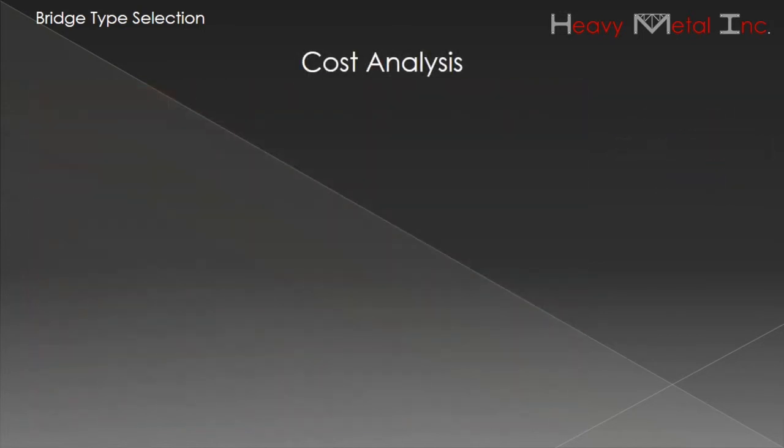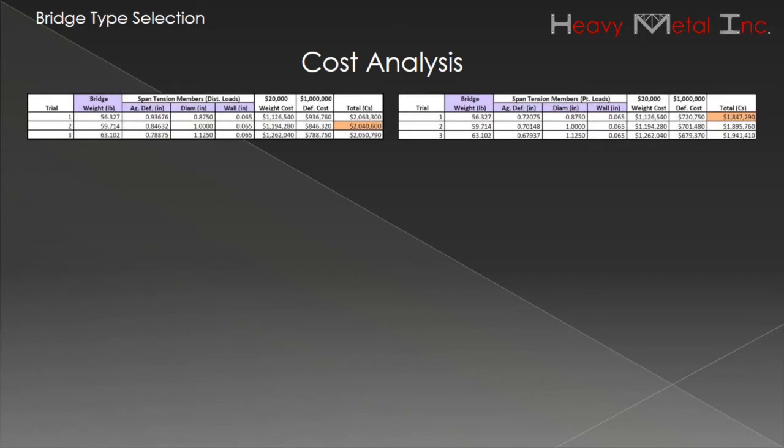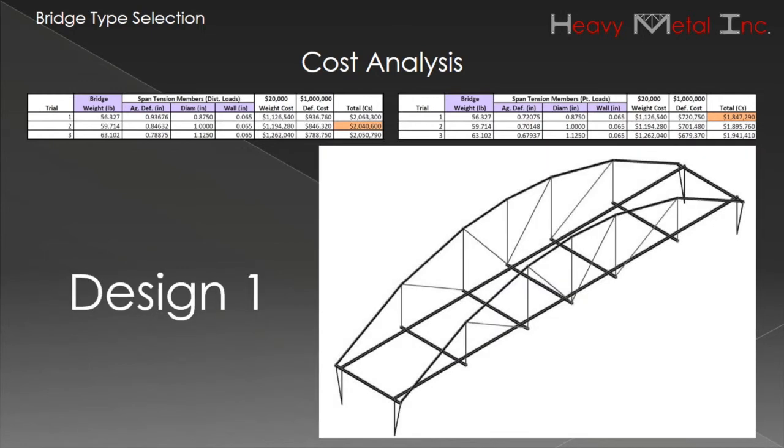Based on the results of the overall deflection and the overall weight of the bridge being the minimum system in terms of cost of all the alternative designs, Heavy Metal Incorporated recommends Design 1.